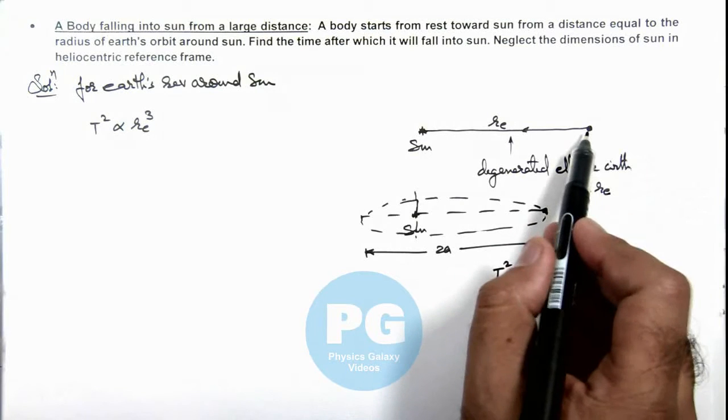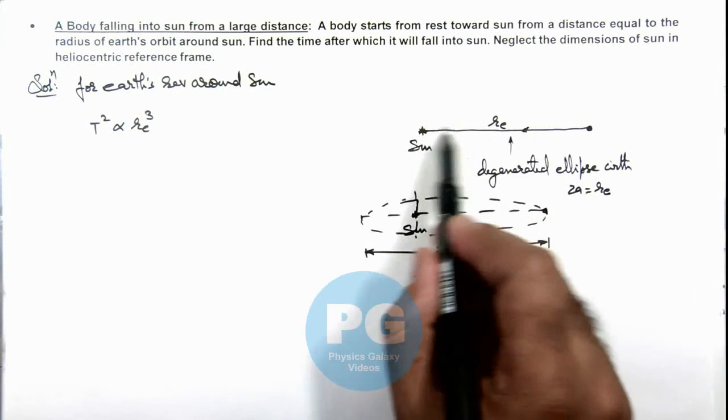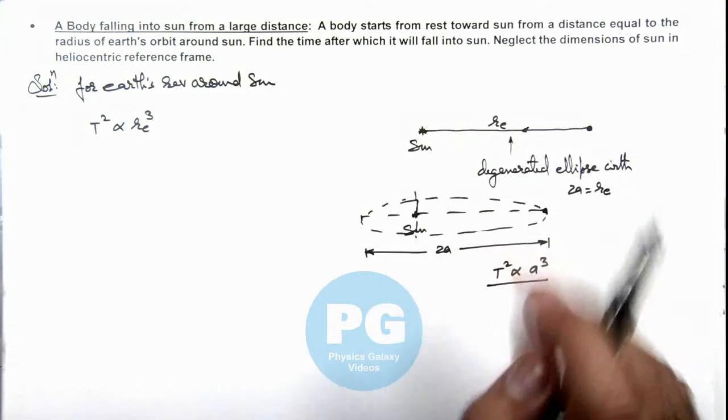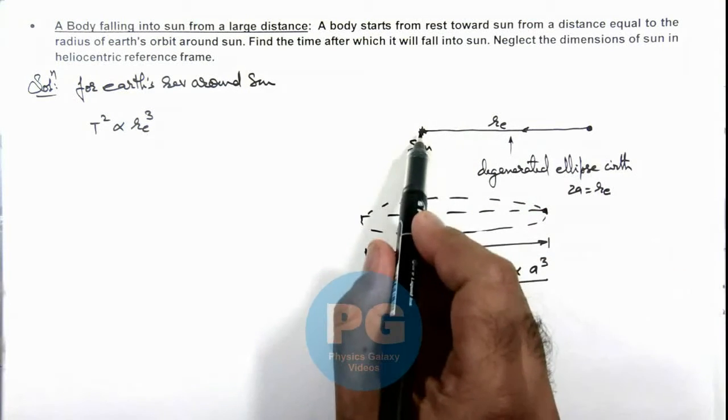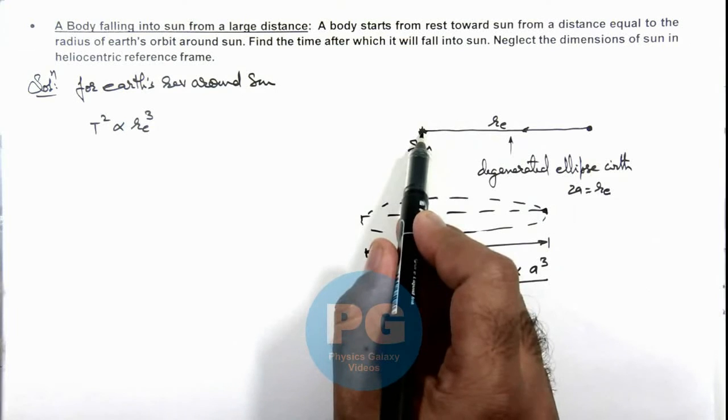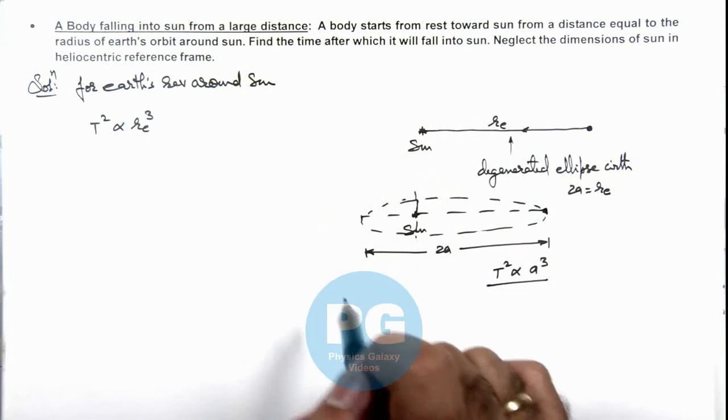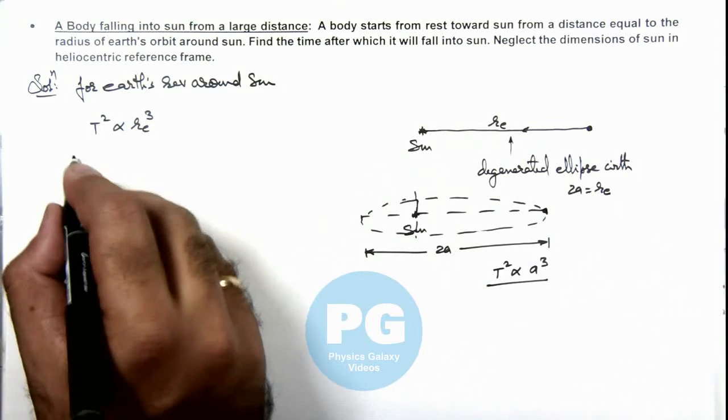So in this situation, the particle is revolving round the sun in elliptical path with minor axis equal to zero. And in that case obviously, the sun will be located at one of the left extreme or right extreme of the ellipse.